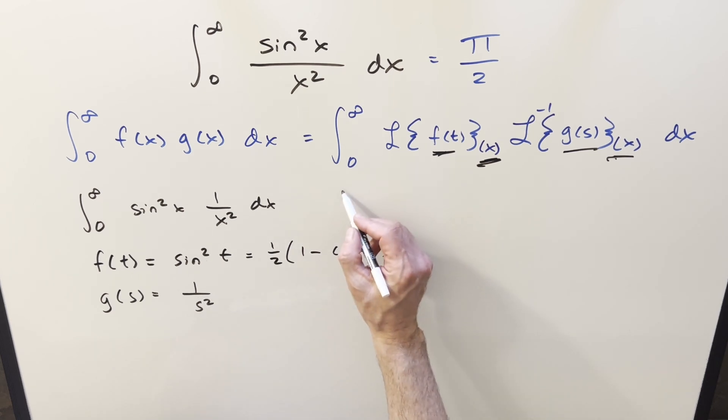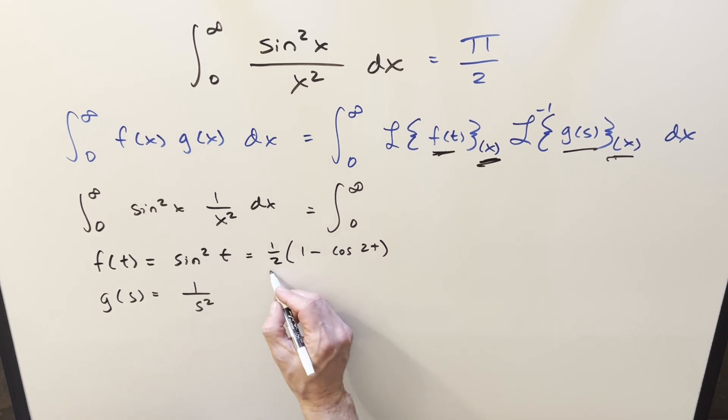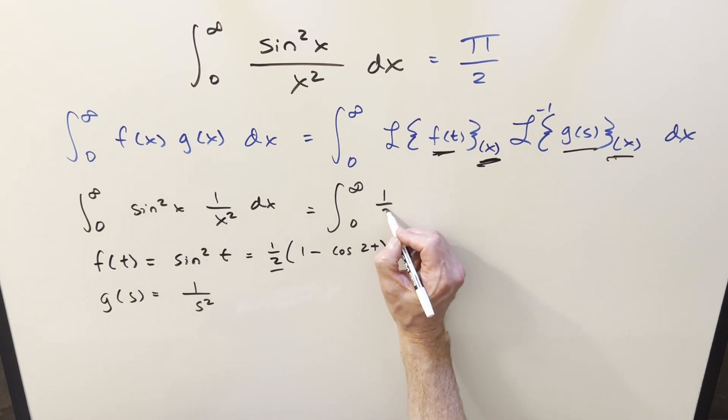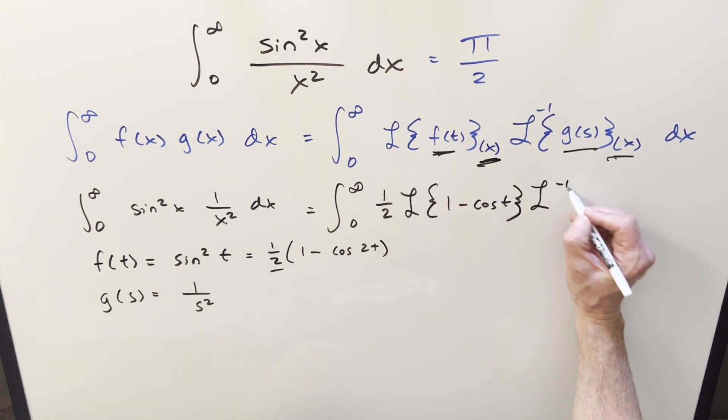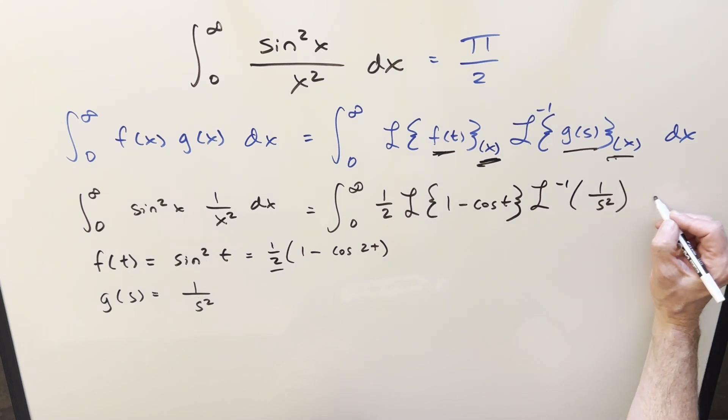So what I'll do is plug this in here. And so what's going to happen, now we're going from 0 to infinity, the 1 half I can bring in front, I can bring out of the Laplace transform as a constant. And then we have all this stuff here. And then for the g of s part, we're going to want the inverse Laplace of just 1 over s squared. And this is all going to be dx.